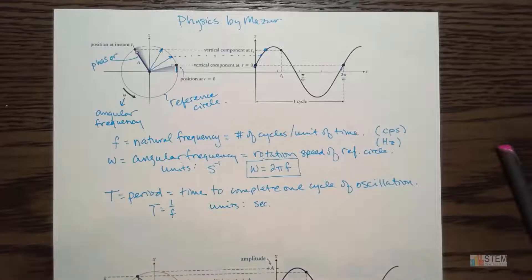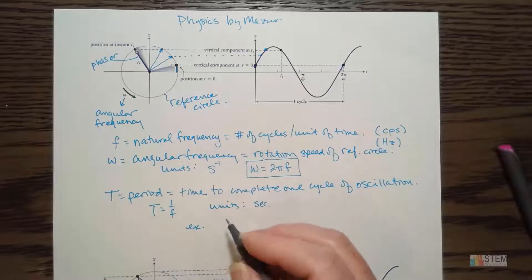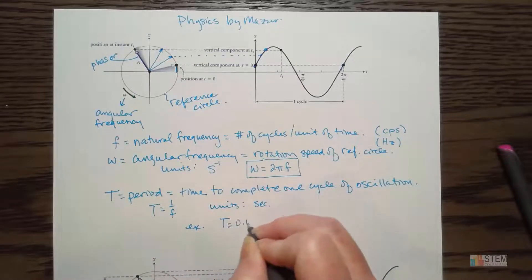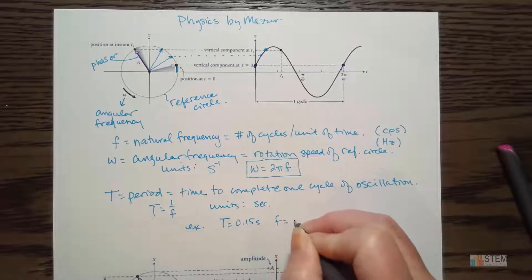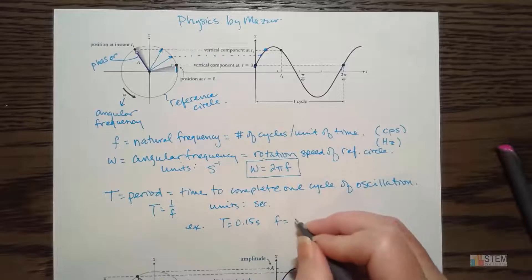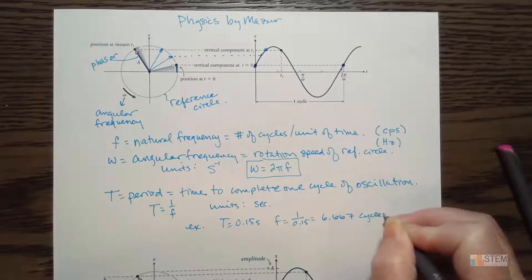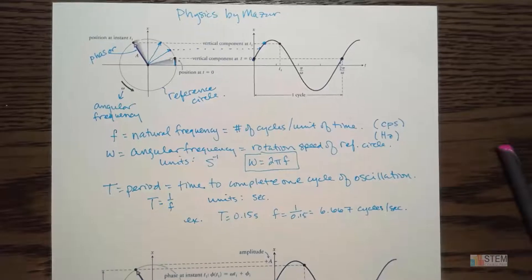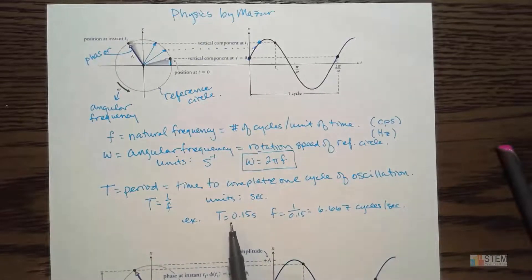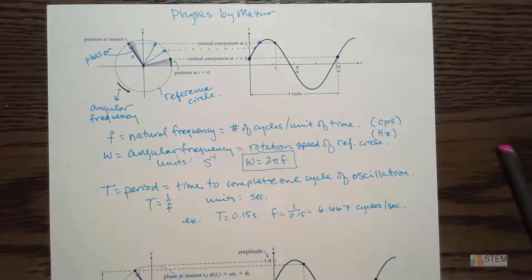F is basically per unit of time, so the units for period would just be seconds. For example, if I've got a period of 0.15 seconds, the frequency would be one over T — that would be 6.667 cycles per second. The period is how long it takes to do one cycle; the frequency is how many cycles you get per unit of time.